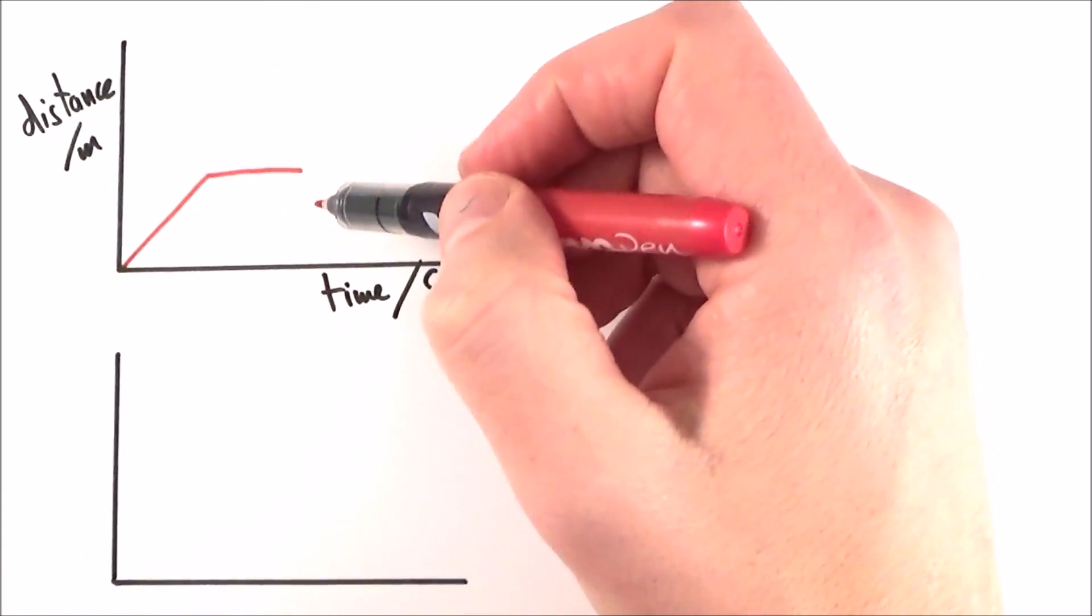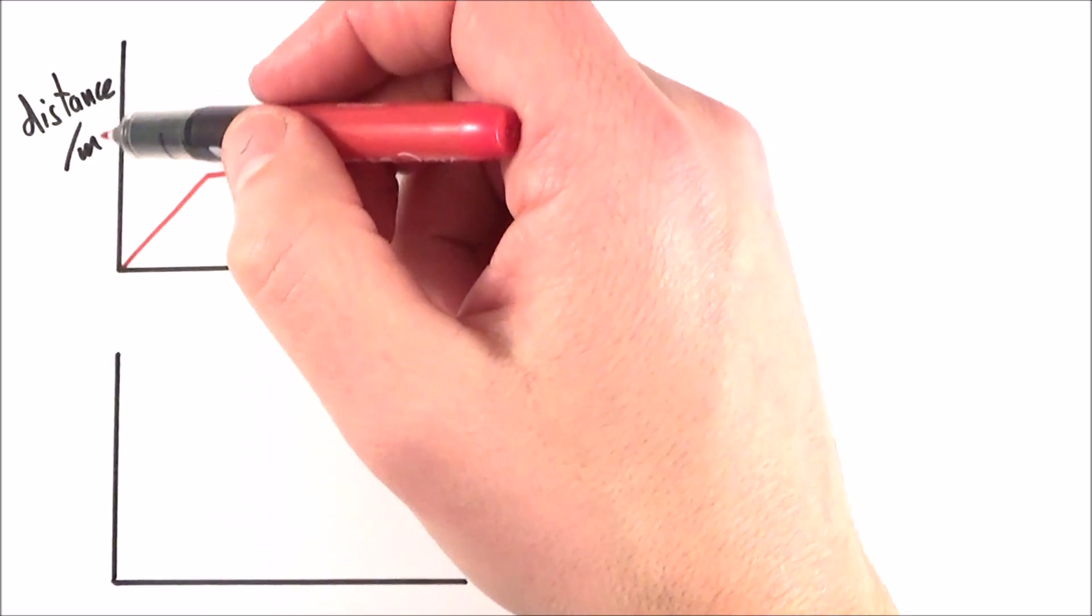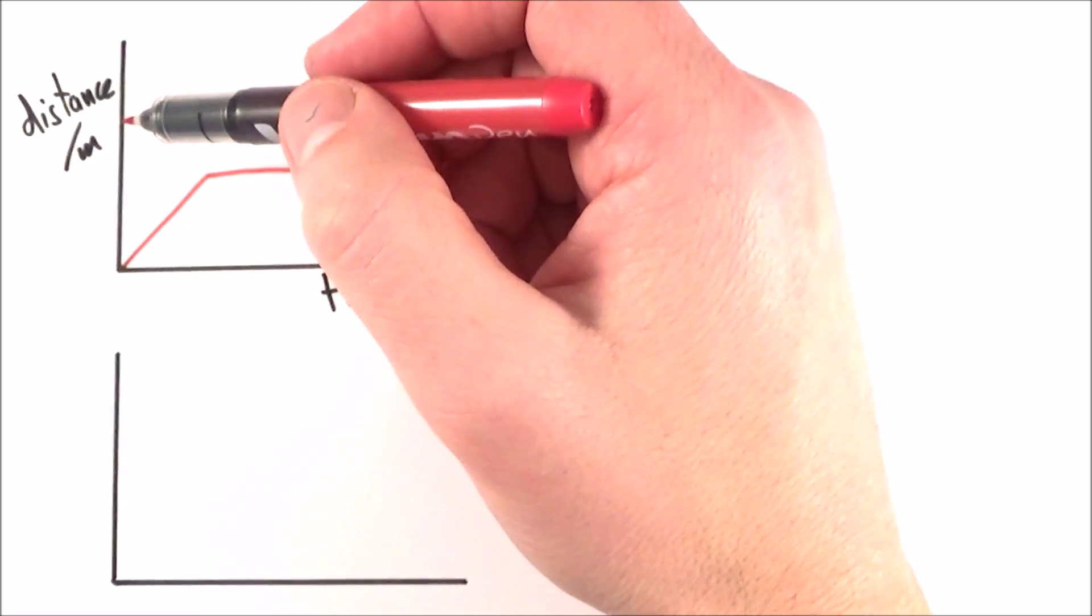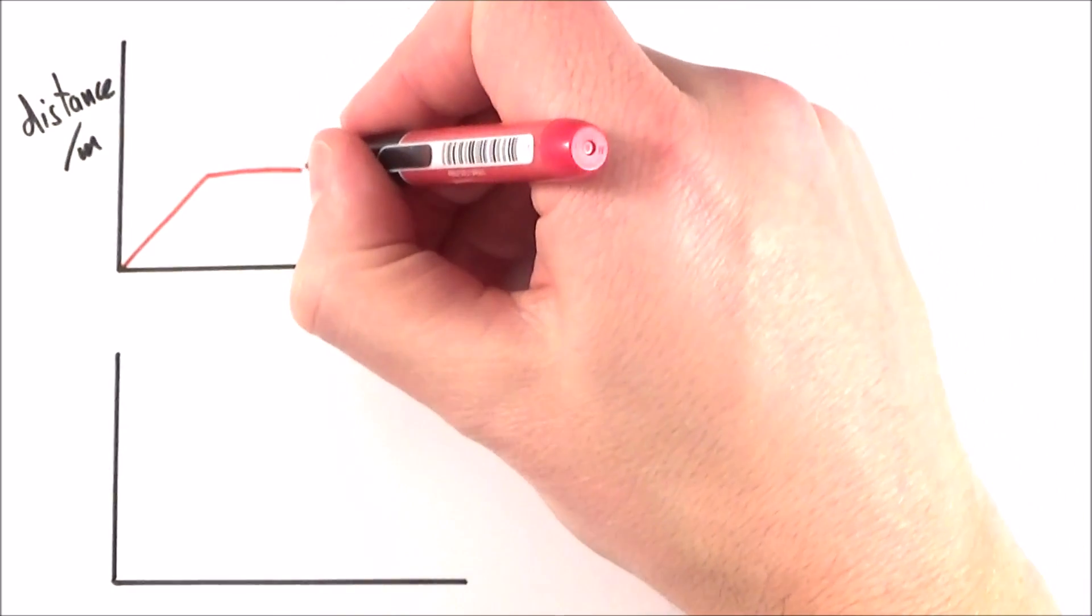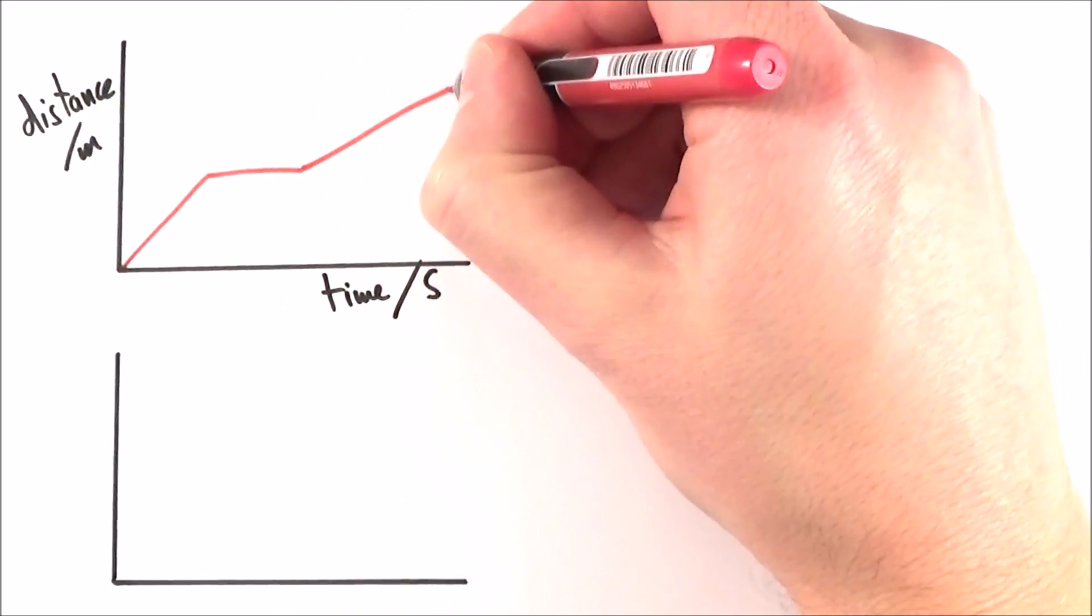What we find with a distance-time graph, because distance is a cumulative thing - you can't go back, you can't take any less steps, all you can do is every step you take just add to the previous amount - we find that we get something a bit like this.